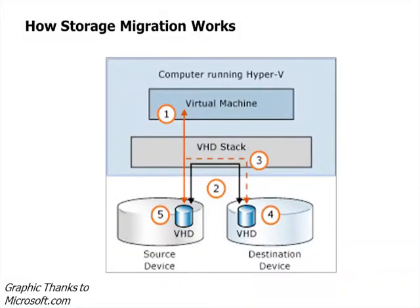When virtual storage from a running virtual machine is moved, disk reads and writes continue to go to the source virtual hard disk. While that happens, the disk contents are copied to the new destination virtual hard disk. After that initial copy is complete, disk writes are mirrored to both source and destination while outstanding changes are replicated. After they are completely synchronized, the virtual machine switches over to using just the destination virtual hard disk, and then the source virtual hard disk is deleted.